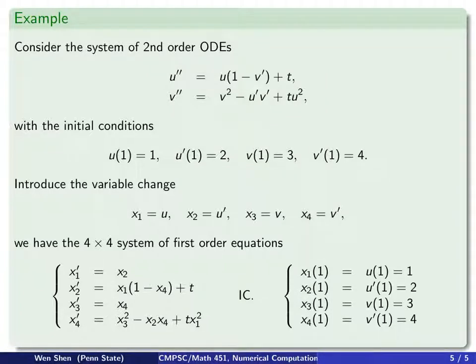The final step is to identify the initial condition. The initial conditions are given at t equals to 1, that's my t0. All the x at that value of t shall be given, which is exactly u1, u1 prime, v1, v1 prime, which we know. We set some dummy numbers to be 1, 2, 3, 4.